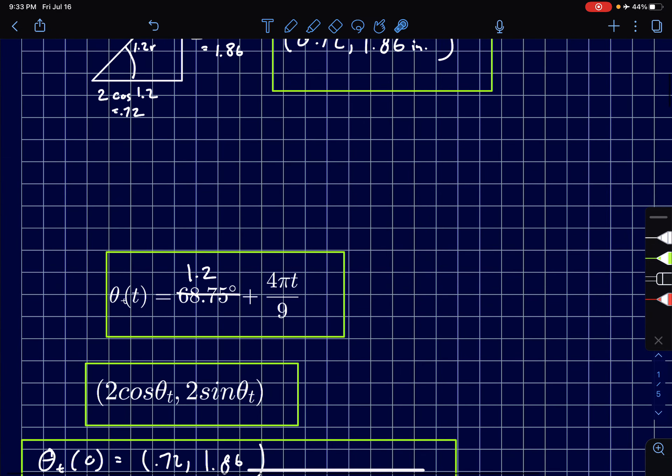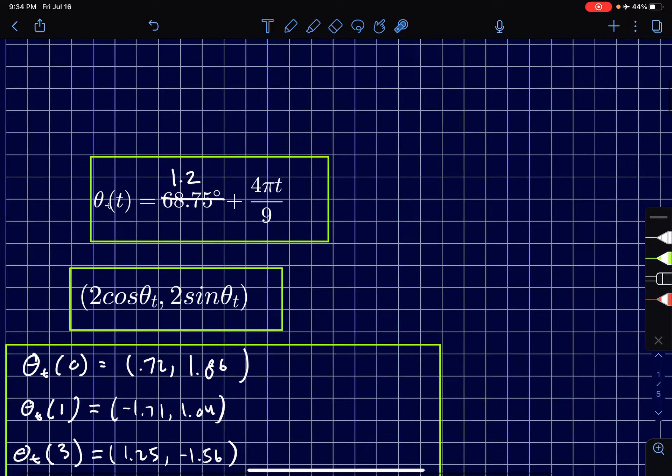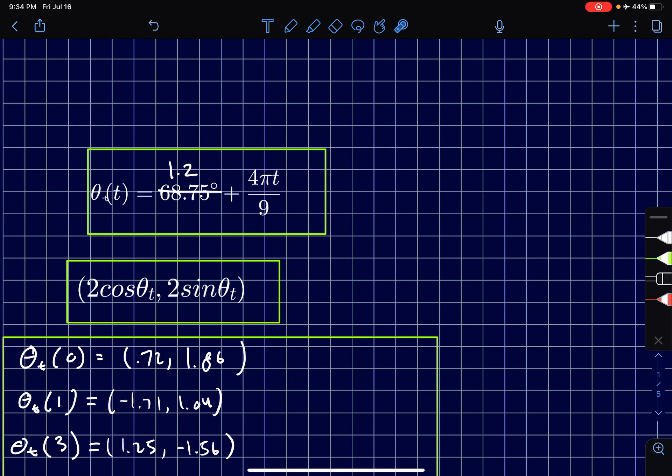So once we get that, we figure our formula is theta sub t of t is going to be equal to 1.2, this is in radians. Originally I did it in degrees but then decided I was not going to convert to degrees, I was just going to set my calculator to radians. We get 1.2 as the starting position plus its angular speed times time. That's going to give us how far it's traveled since its starting position.